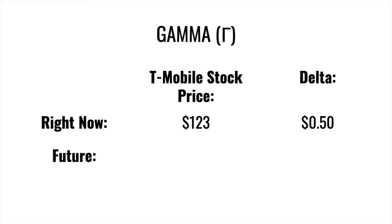Now let's look at gamma. Gamma is symbolized by an upside-down L. Gamma is different from all the other four Greeks — it tells us the rate of change of delta, not how some factor affects the price of an option directly. If you have experience with calculus: imagine a function f(x) representing the option's value, then gamma symbolizes f double prime of x. So it's finding the rate of change of the rate of change.